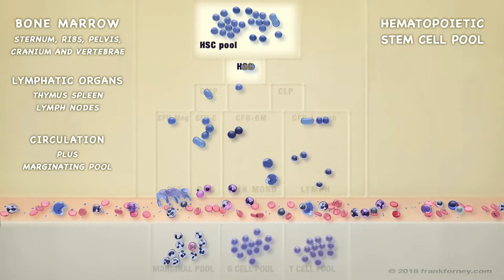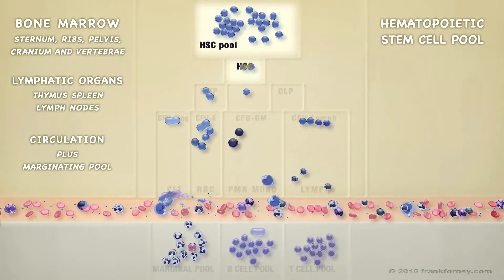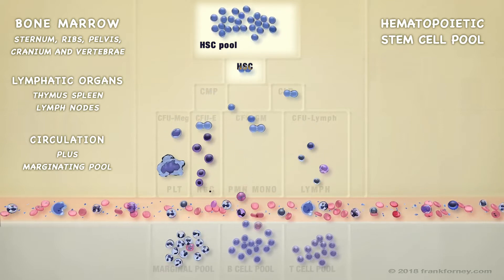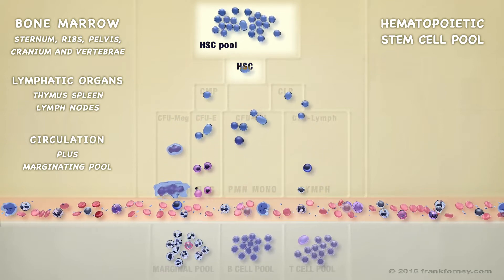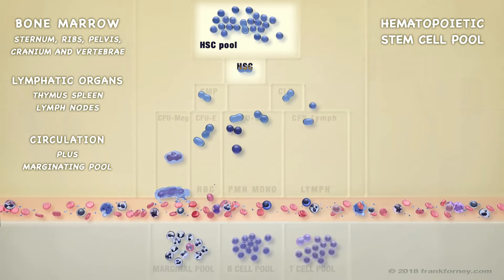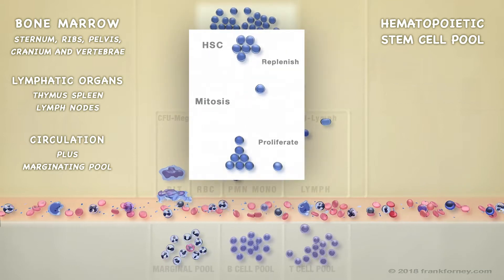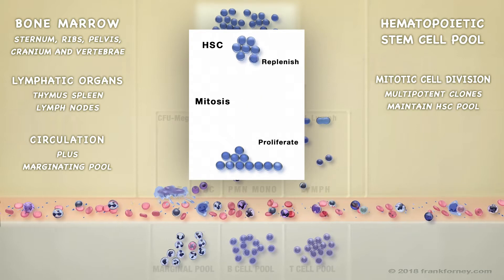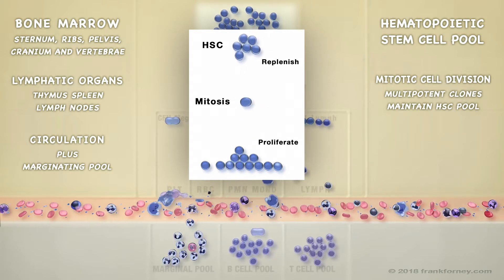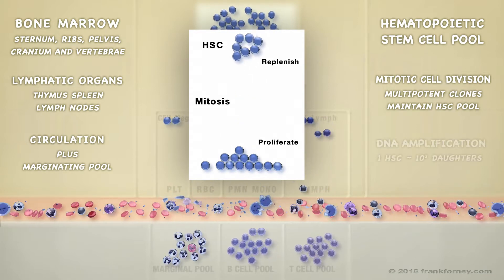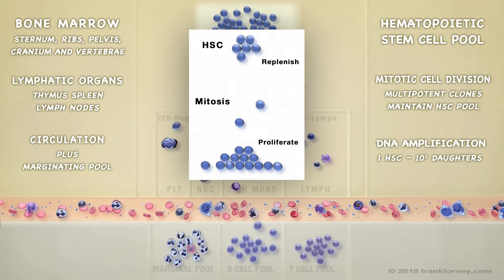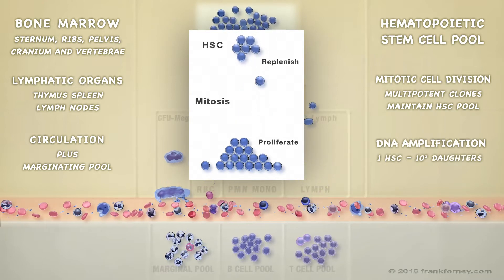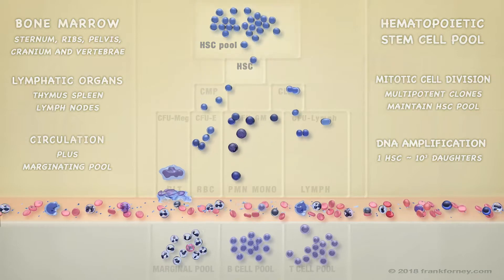Stem cells in the bone marrow are collectively known as the hematopoietic stem cell pool. Stem cells proliferate by mitosis. Daughter cells replenish the stem cell pool and proliferate into all types of blood cells. Each hematopoietic stem cell will undergo multiple mitotic cell divisions, thus amplifying the genome.